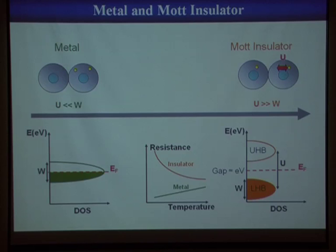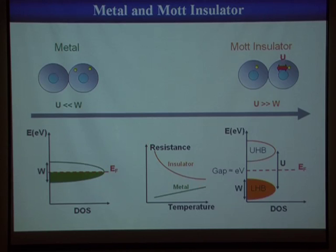If you look at resistance versus temperature, this is well known for metals — you have a resistance that decreases with temperature — while for a Mott insulator, the behavior is insulating with resistance that goes up when temperature goes down. The goal of this talk is to find ways to go from this insulating behavior to the metallic phase.